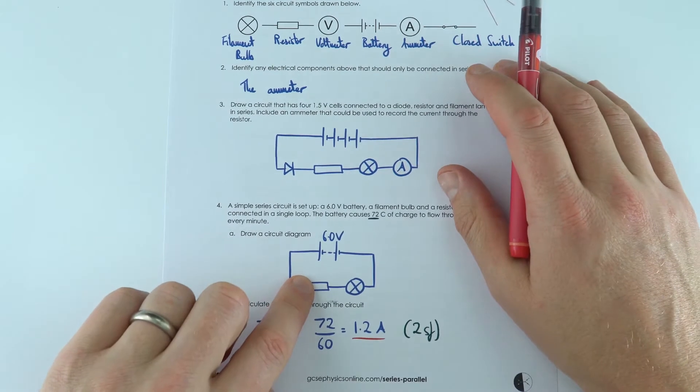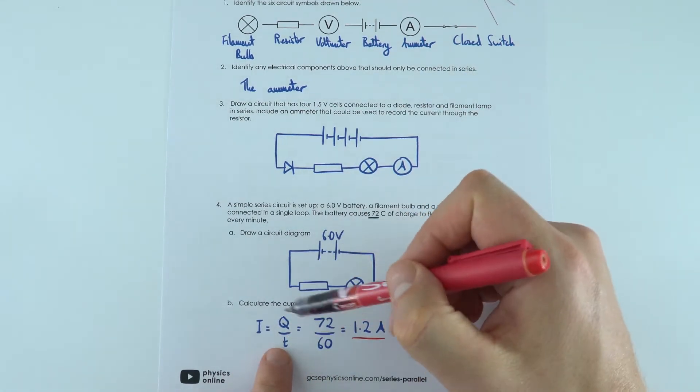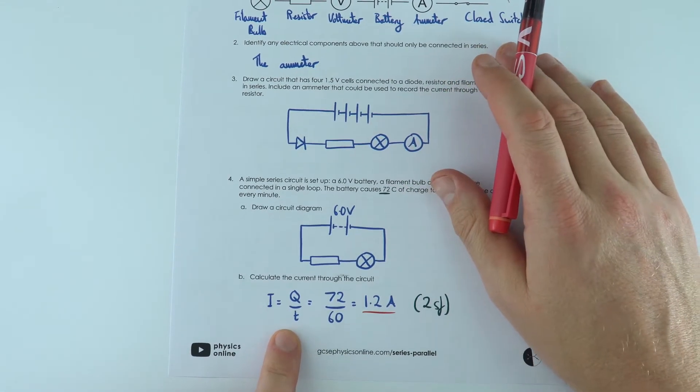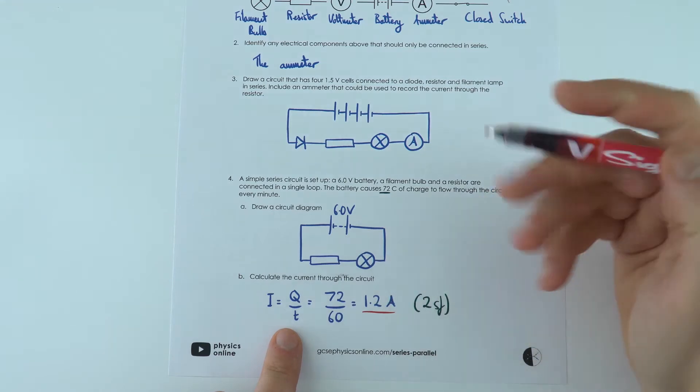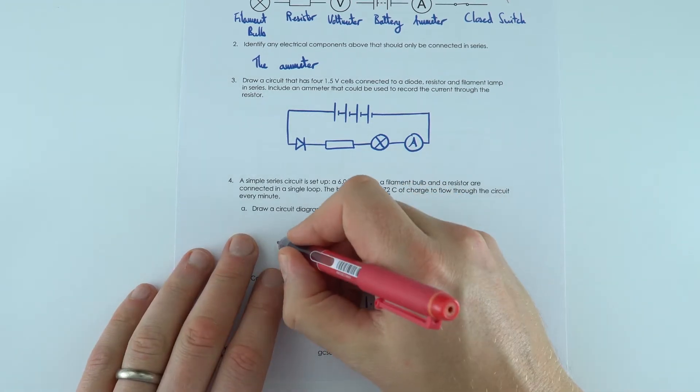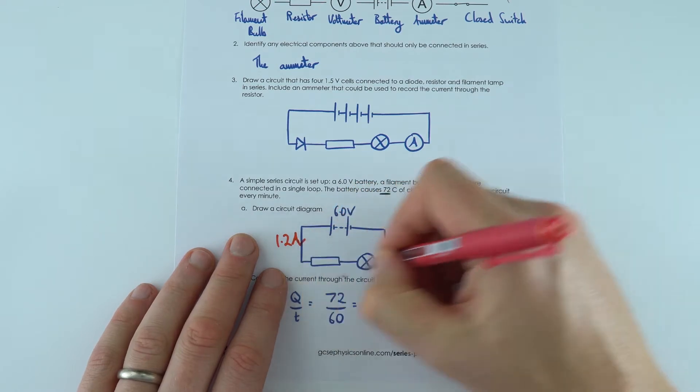I then drew the circuit diagram over here, and the current through the circuit is just going to be using this equation I equals Q divided by T. So I found the numbers from the question to give the current as 1.2 amps, and it's always useful to maybe draw this onto your diagram. So that's 1.2 amps which is flowing around the circuit.